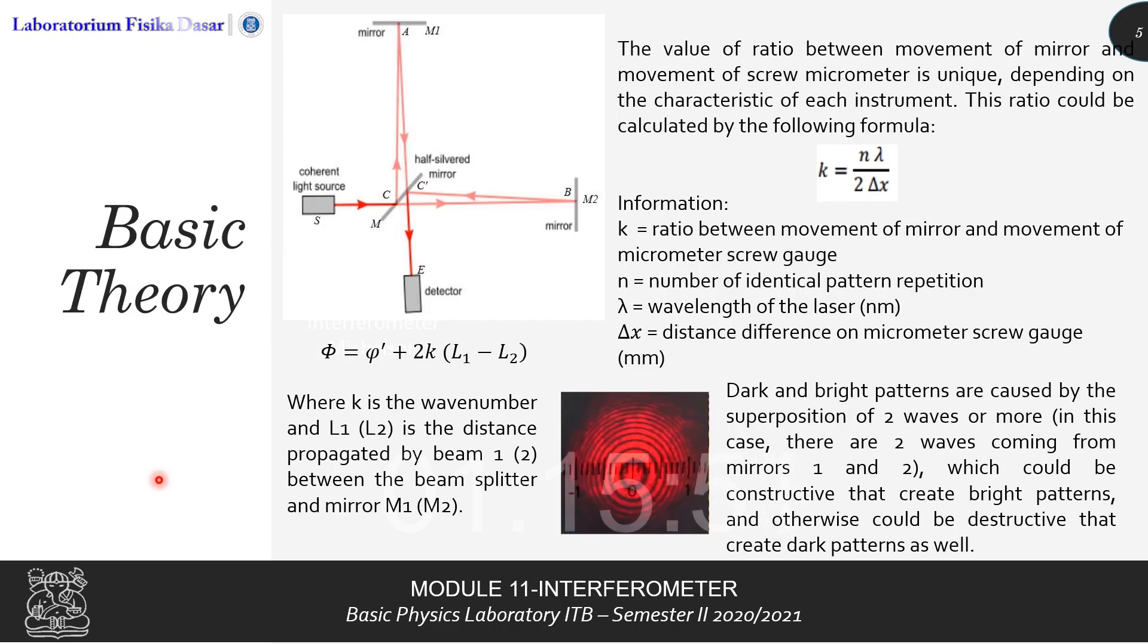Before we dive into the data processing section, let us review a bit of the basic theory that will be used in this module. On the upper left corner, we can see a diagram depicting the Michelson-Morley experiment setup. Here we have a coherent light source, a beam splitter or half-silvered mirror, two mirrors M1 and M2, as well as a detector or screen.